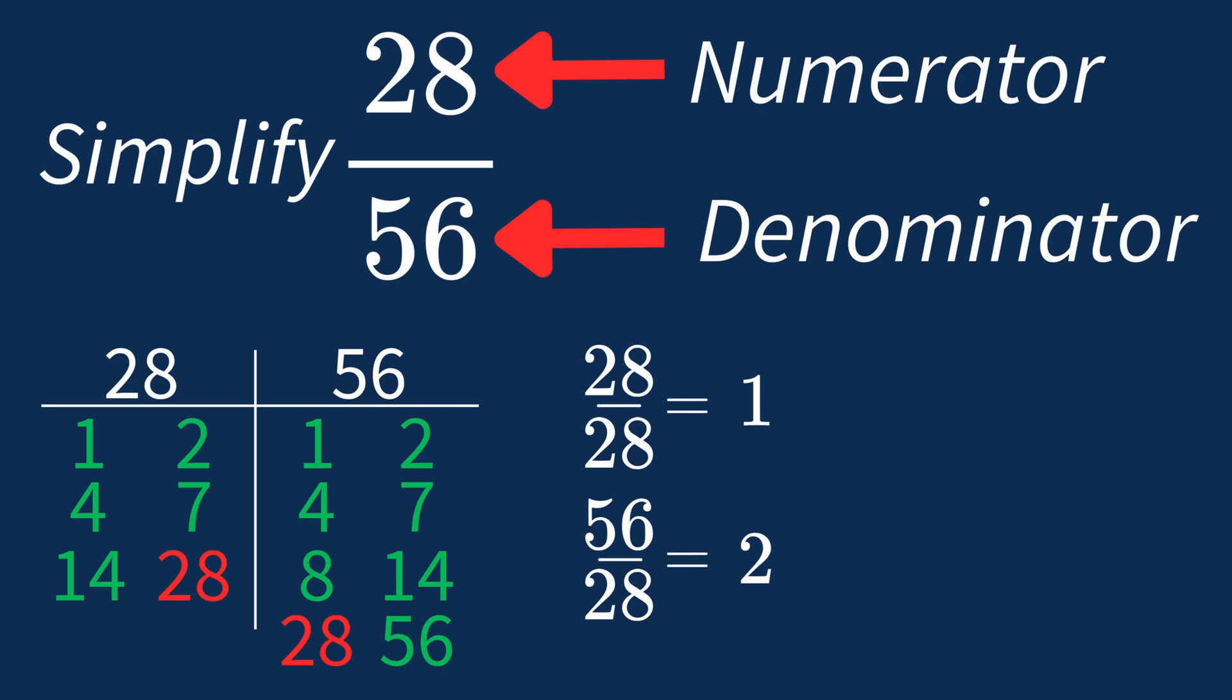So after dividing, the simplified fraction is 1 over 2. And we know that 1 over 2 is in its simplest form, because the only common factor between 1 and 2 is 1. And when 1 is the largest common factor, we know that our fraction has been simplified.